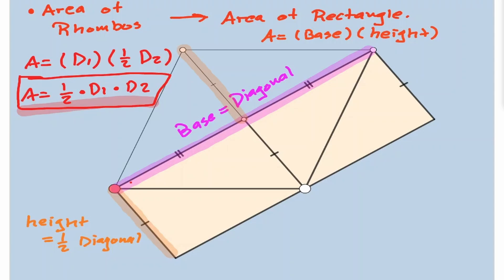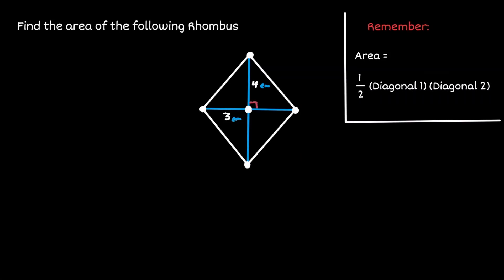Let's take a look at an example. Given the following rhombus, let's find the area of it. Let's remind ourselves that we have said that the area for any rhombus, it is one half times the multiplication of the length of both diagonals in a rhombus. Let's start by finding the length of the first diagonal. Let's consider the horizontal line to be our first diagonal.